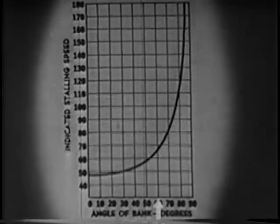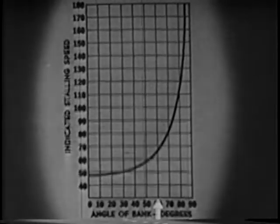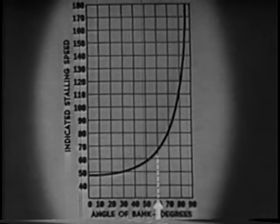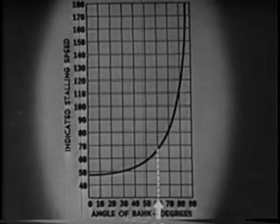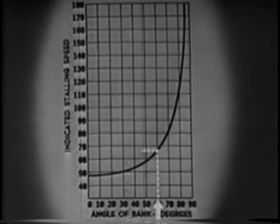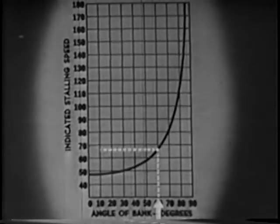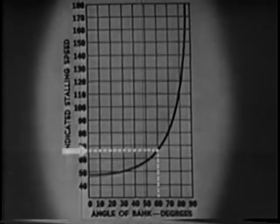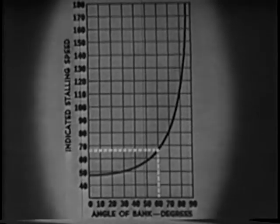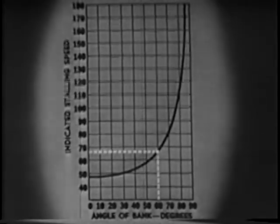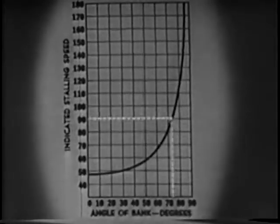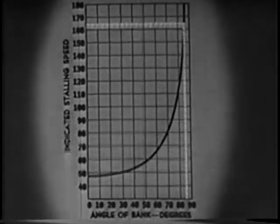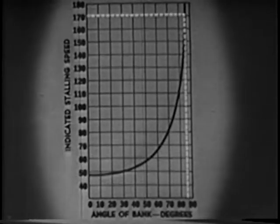And in a 60-degree bank, the stall speed is up — to be safe, let's say 68 knots. Notice that when bank is over 50 degrees, stalling speed increases very rapidly.